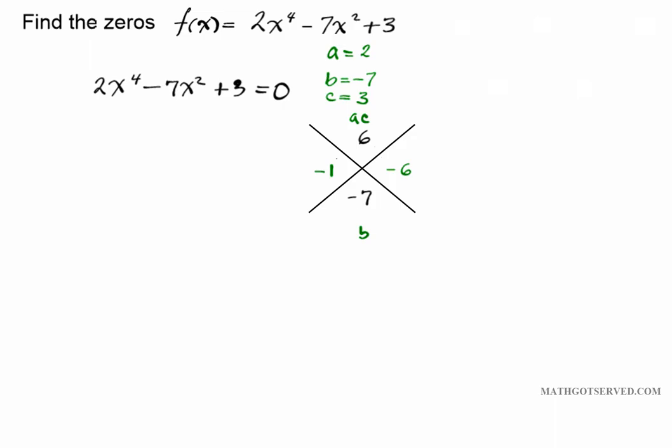Now what I'm going to do is I'm going to replace this 7x squared in the middle with negative 1 and negative 6 as its coefficients. So we're going to rewrite this equation as 2x to the fourth minus x squared minus 6x squared plus 3 equals 0.